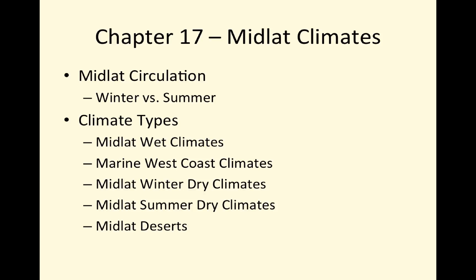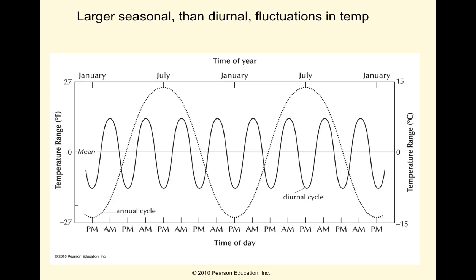In chapter 17, we'll look at mid-latitude climates, mostly focusing on the United States to keep it more simple. We'll look at the mid-latitude circulation in winter versus summer, the different climate types including wet climates, west coast climates, winter dry climates, summer dry climates, and deserts, and look at the mechanisms that are causing these different types of climates.